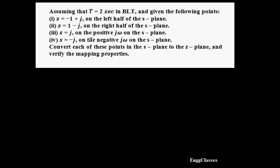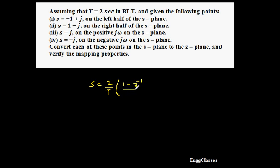The task is to convert all of these points in the s-domain to the z-domain and verify the mapping properties. Whenever I want to convert s-domain to z-domain using bilinear transformation, I have the expression: s is equal to 2 divided by T, times (1 minus z-inverse) divided by (1 plus z-inverse). This is the formula I make use of to convert from s-domain to z-domain.